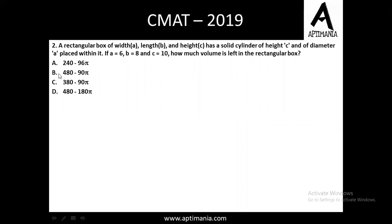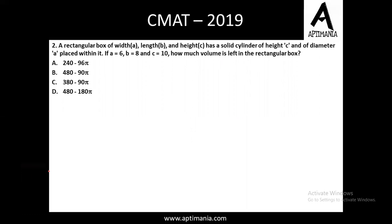Question number 2 is from mensuration. A rectangular box of width A, length B and height C has a solid cylinder of height C and diameter A placed within it. The values A, B, C are given as 6, 8, 10 respectively. We need to find how much volume is left in the rectangular box, so we subtract the volume of the cylinder from the volume of the cuboidal box.